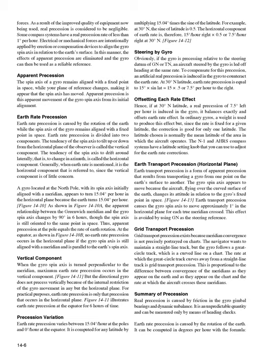Earth rate precession. Earth rate precession is caused by the rotation of the earth while the spin axis of the gyro remains aligned with a fixed point in space. Earth rate precession is divided into two components. The tendency of the spin axis to tilt up or down from the horizontal plane of the observer is called the vertical component. The tendency of the spin axis to drift laterally — that is, to change in azimuth — is called the horizontal component. A gyro located at the north pole, with its spin axis initially aligned with the meridian, appears to turn 15.04 degrees per hour in the horizontal plane because the earth turns 15.04 degrees per hour.